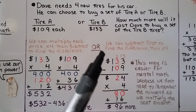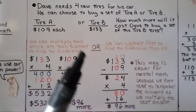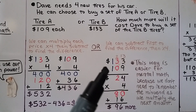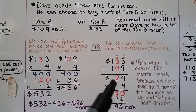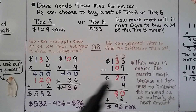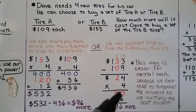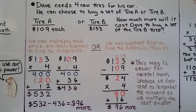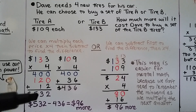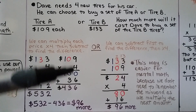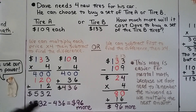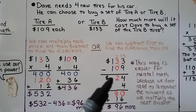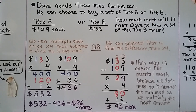Another way to solve this is to subtract first, then multiply by 4. We subtract 133 minus 109 to find the difference in price, which is $24. Then we multiply $24 times 4: 4 times 20 is 80, and 4 times 4 is 16, giving $96 more — the same answer. This way is easier for mental math because we don't have to remember 532 while multiplying 109 times 4 and then also remember the minuend and subtrahend for subtraction.